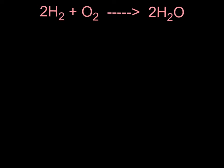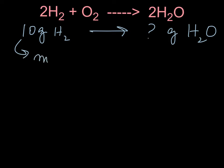All right, so what we have done so far, we were given 10 grams of H2 and we were asked how many grams of H2O can be produced. So, so far what we have done, we managed to convert this into moles of H2, and we said we had 5 moles of H2.